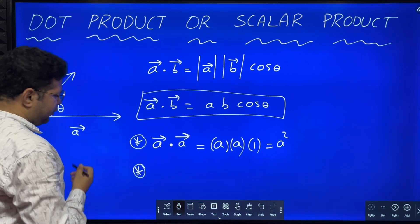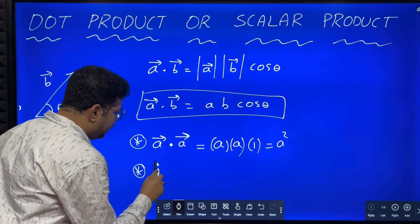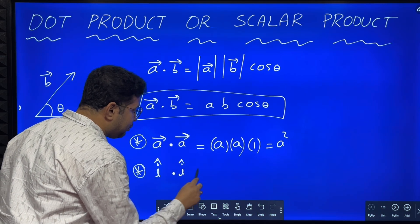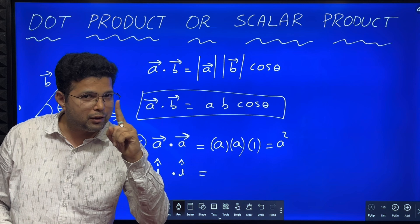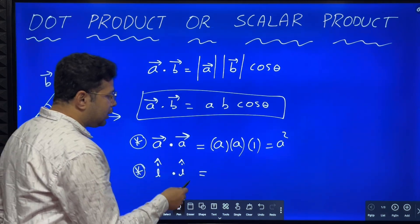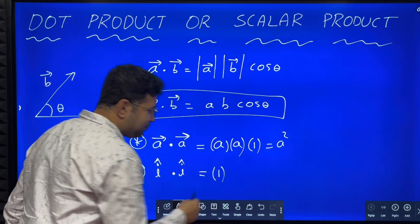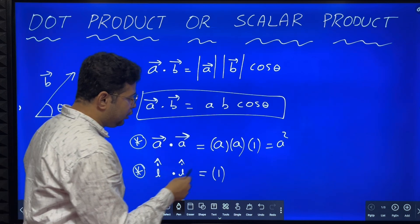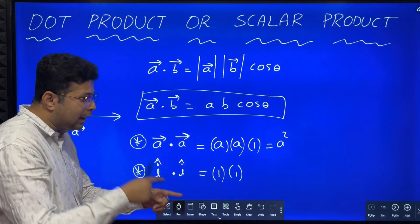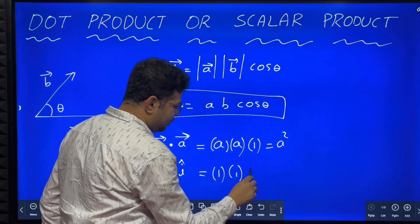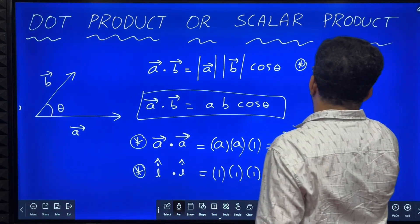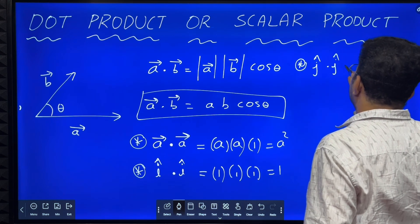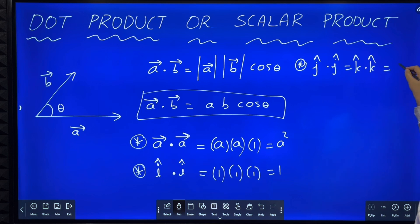Now, what is i cap dot i cap? i cap is a unit vector along the x-axis. The magnitude of a unit vector is one. So i cap dot i cap equals magnitude of i cap, which is one, into magnitude of i cap, which is one, into cos zero, which is one. Therefore i dot i equals one. Similarly, j cap dot j cap equals k cap dot k cap equals one, because both vectors are acting in the same direction.